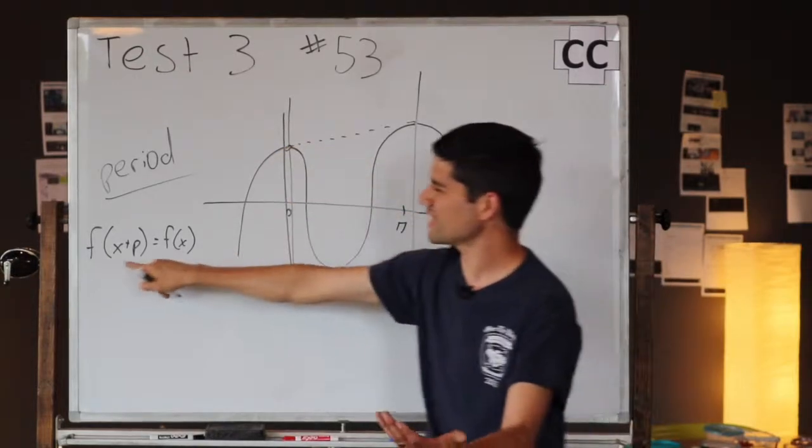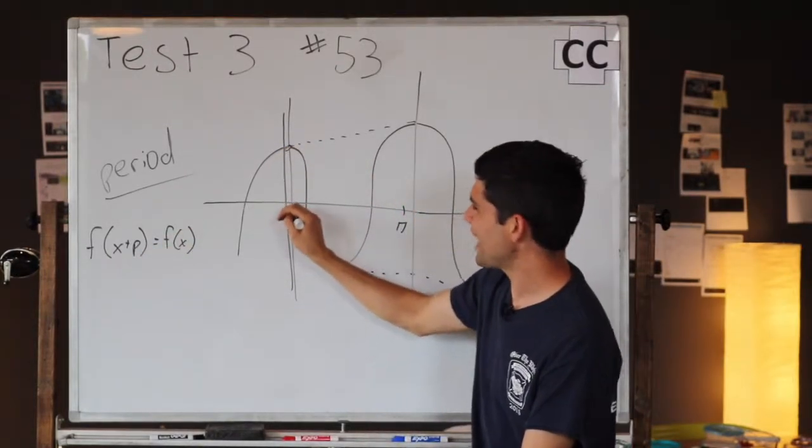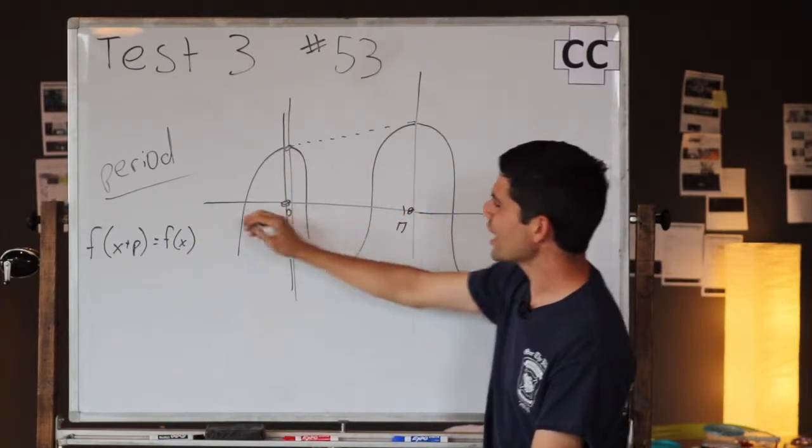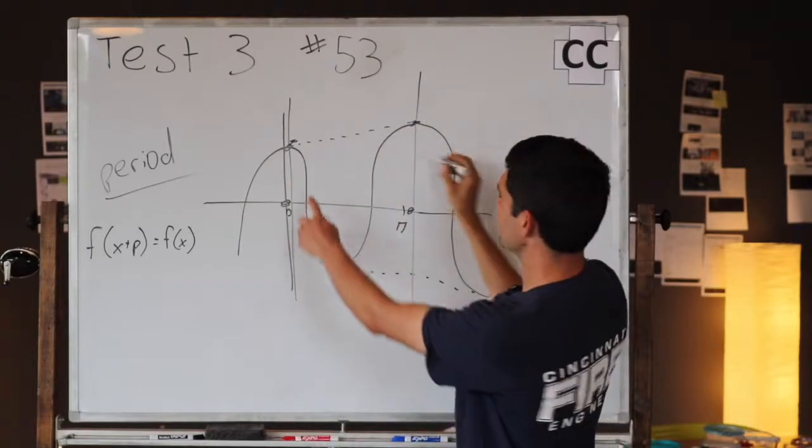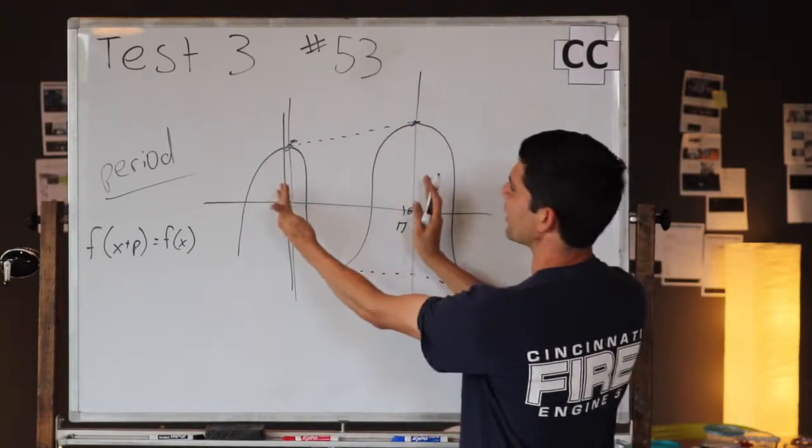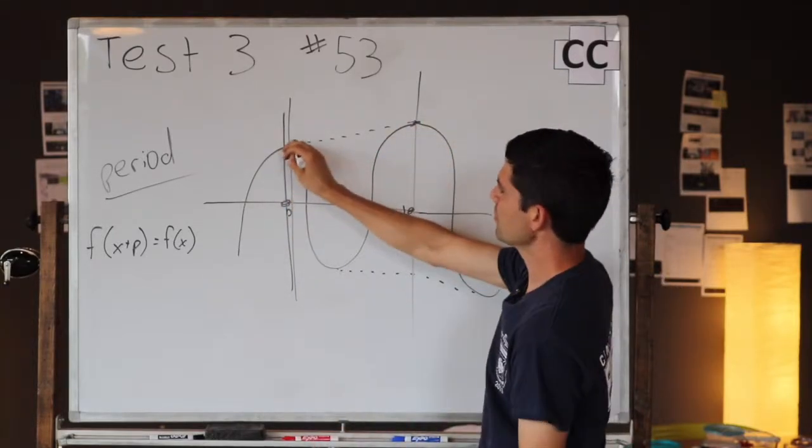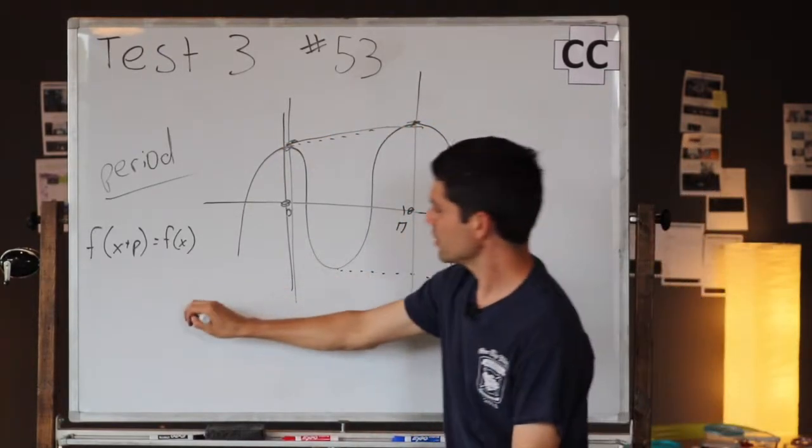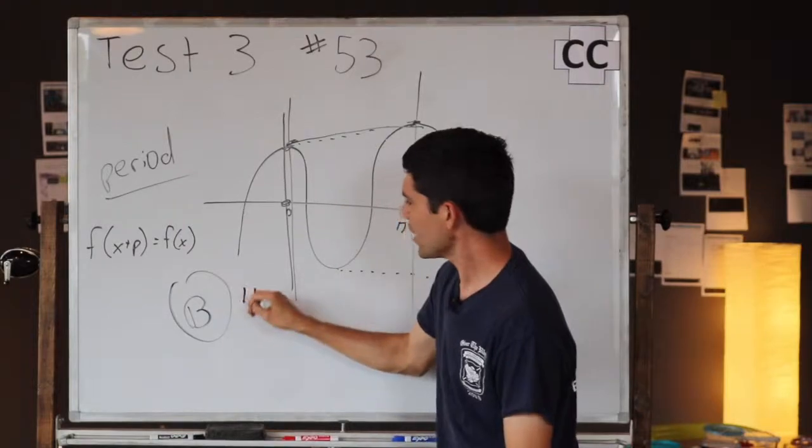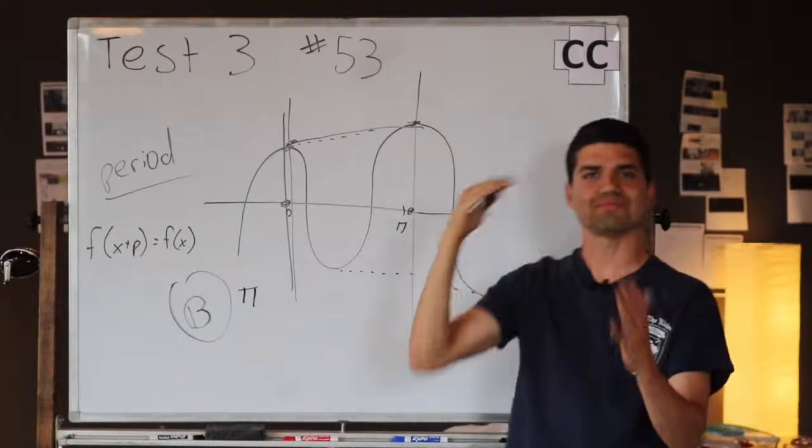Starting at zero, the next crest is at pi, so the period... and basically what this is saying is what do you have to add to x such that it's the same. You see, it could be any two points. It's always pi off when you get to the same point. And then that's how you get your answer of letter B, pi, because that's your period. Good job.